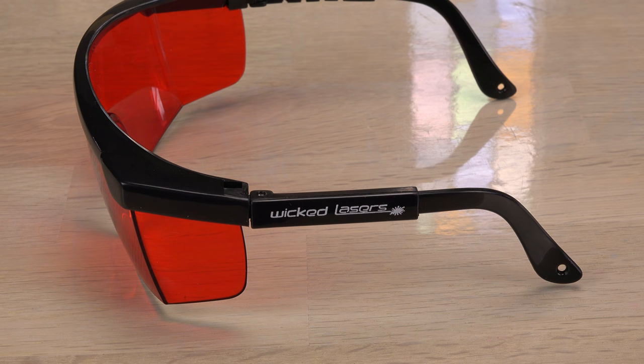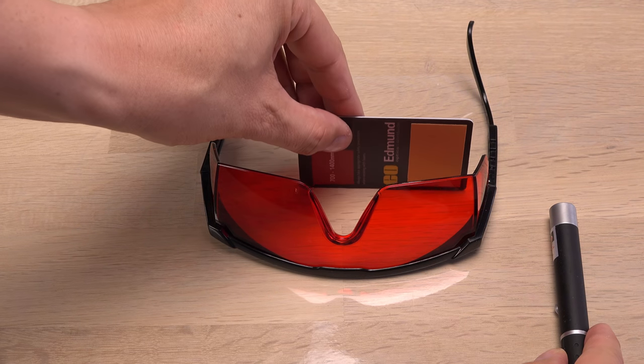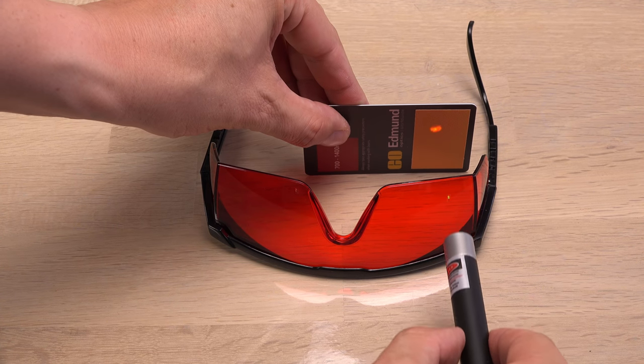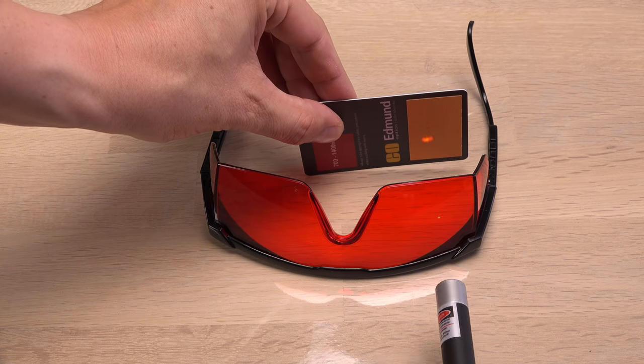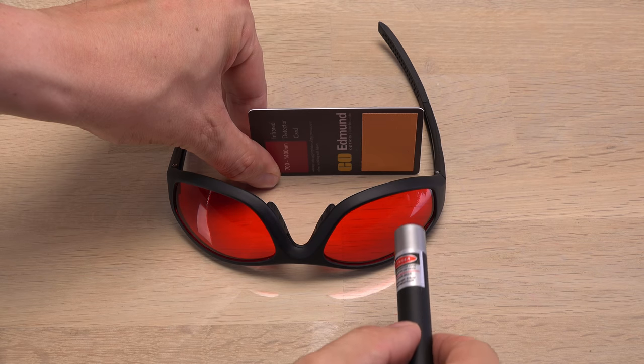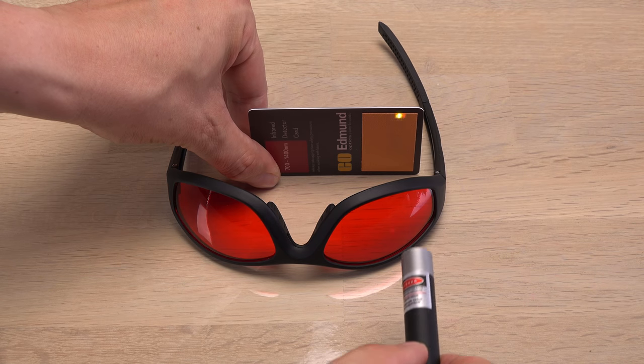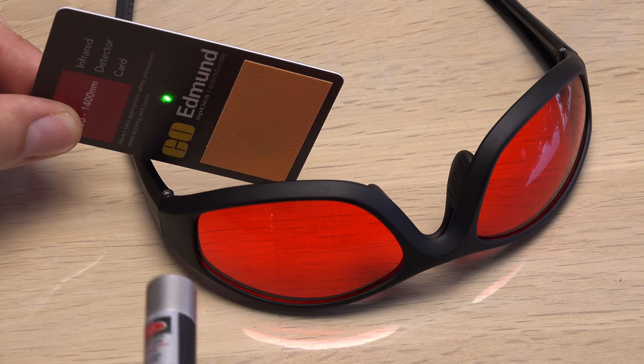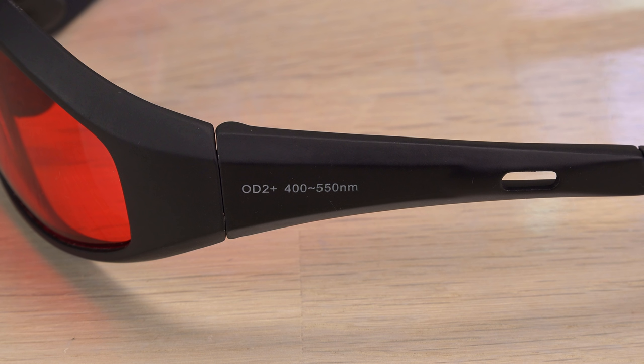First up are a pair from Wicked lasers. Not expensive but meant for low powered green laser pointers. Let's see if they block infrared too. No. Not at all. Lots of infrared detected on the card. It's the same with their more sporty looking glasses. To be fair they are not advertised to protect against infrared. Only some visible wavelengths. And only OD2 Plus which is suitable for power up to around 100mW.